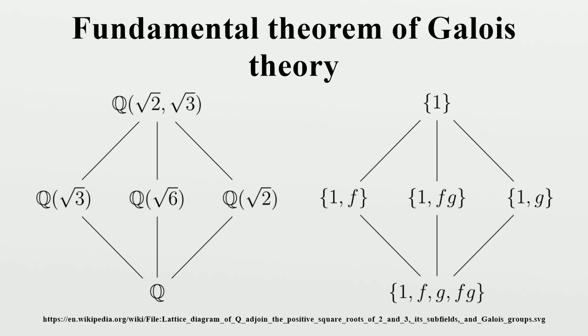Example 2: The following is the simplest case where the Galois group is not abelian. Consider the splitting field K of the polynomial X³-2 over Q, that is, K = Q(θ,ω), where θ is a cube root of 2, and ω is a cube root of 1.